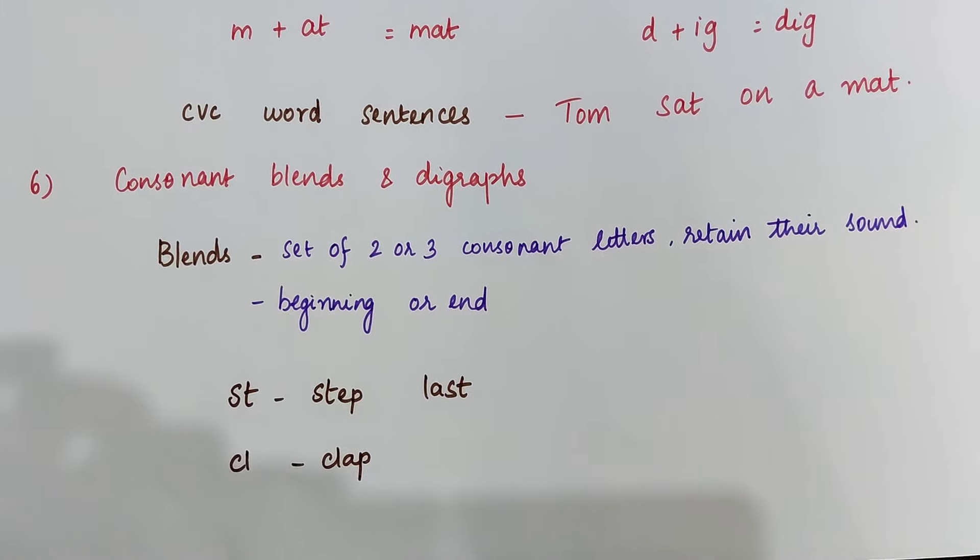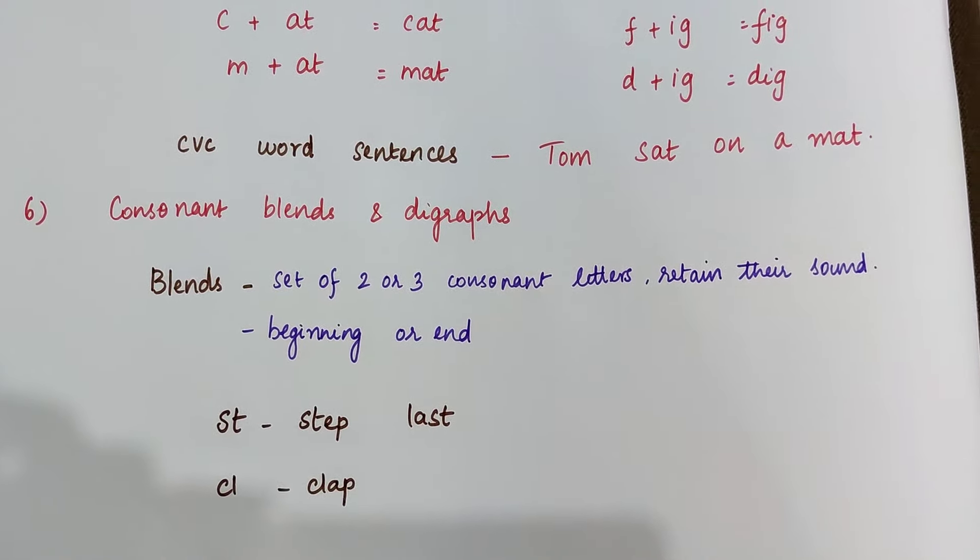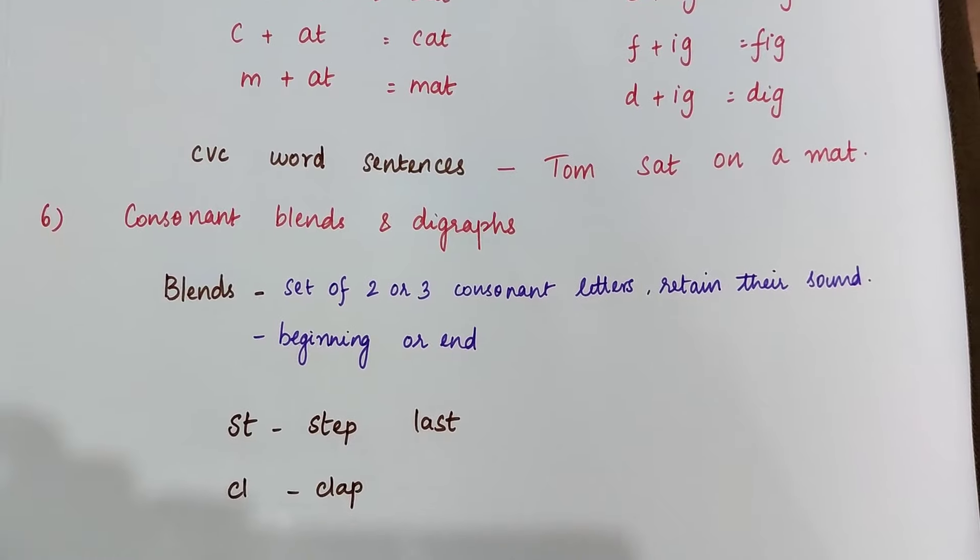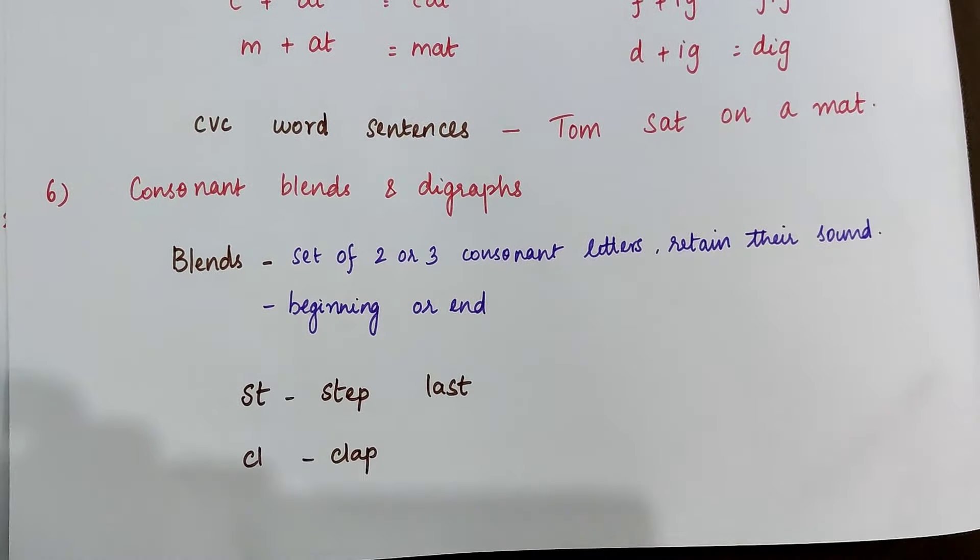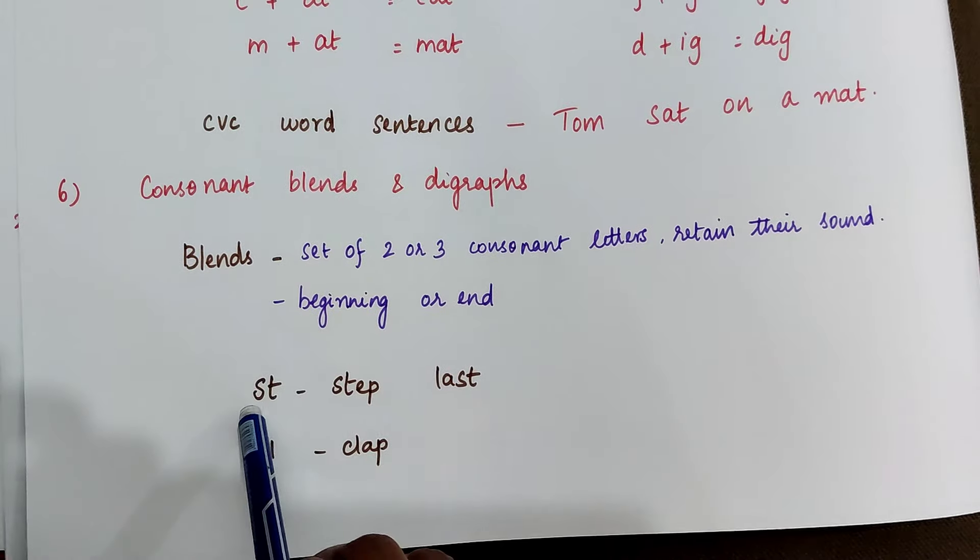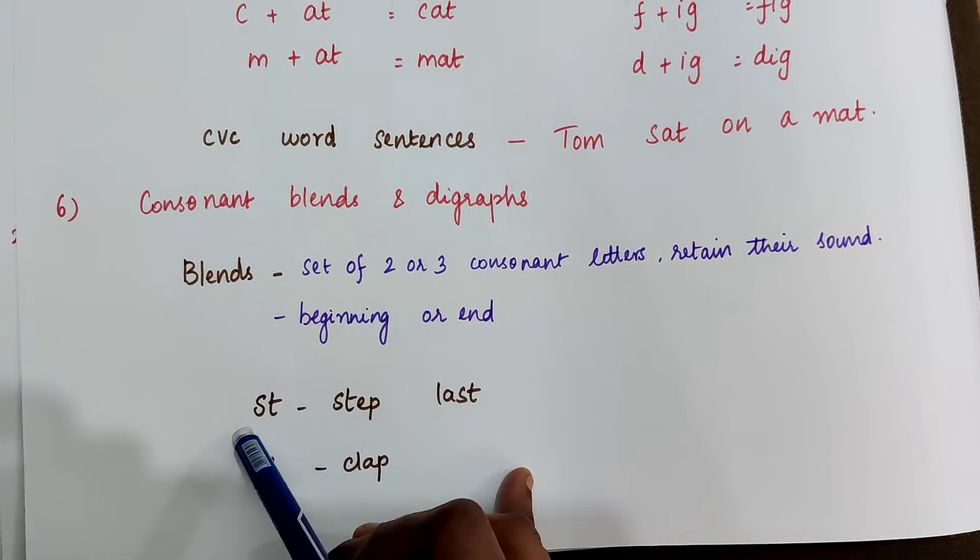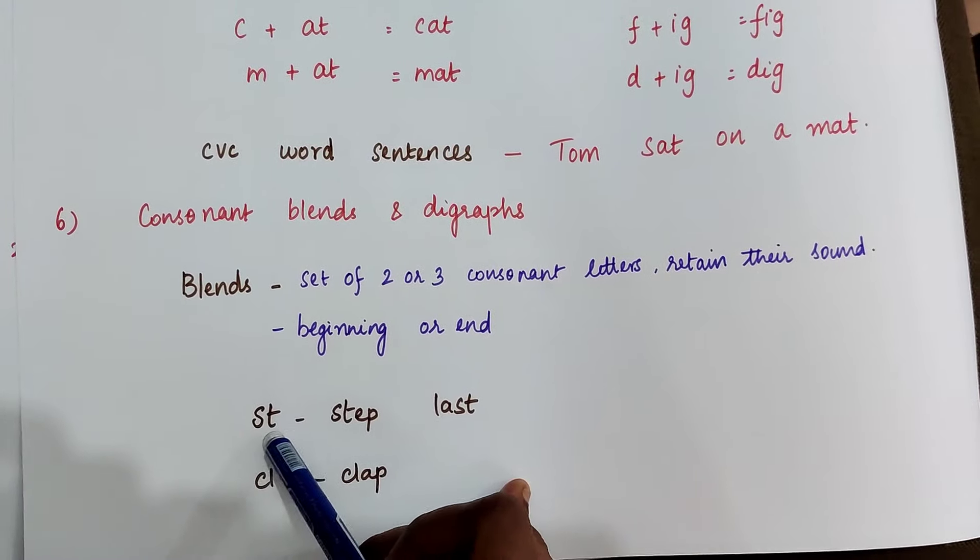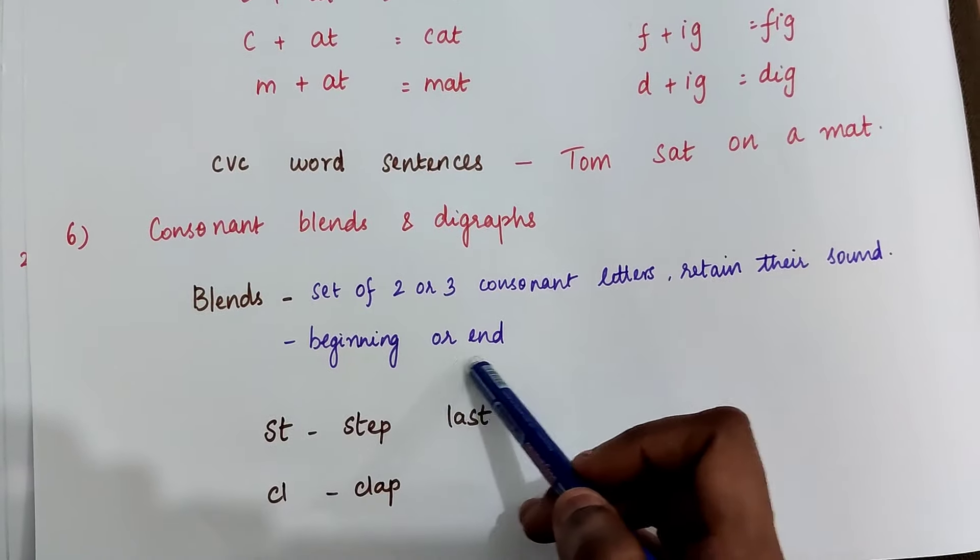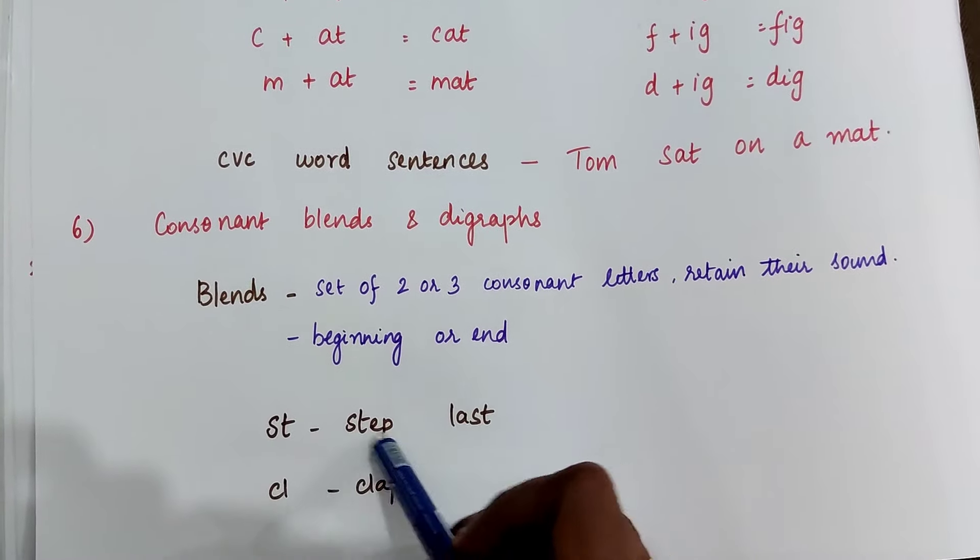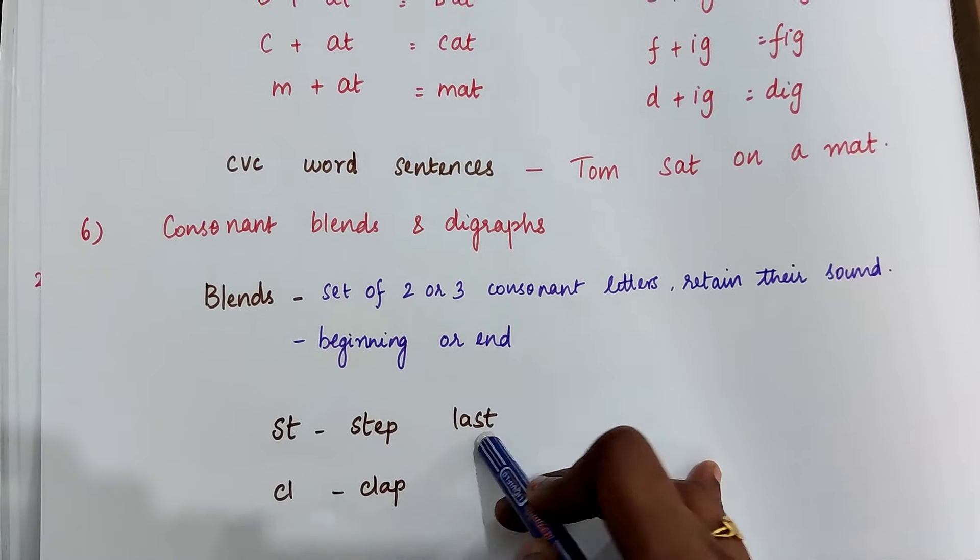The next step is to teach consonant blends and digraphs. Two or more consonants put together make a blend. The sound of the letters in the blends do not change. They retain their sound. For example, this is a blend st. Here we could hear both the sound of s and t. The blend can come either in the beginning or end. Here in this example step it comes in the beginning, and last in this example it comes in the end.